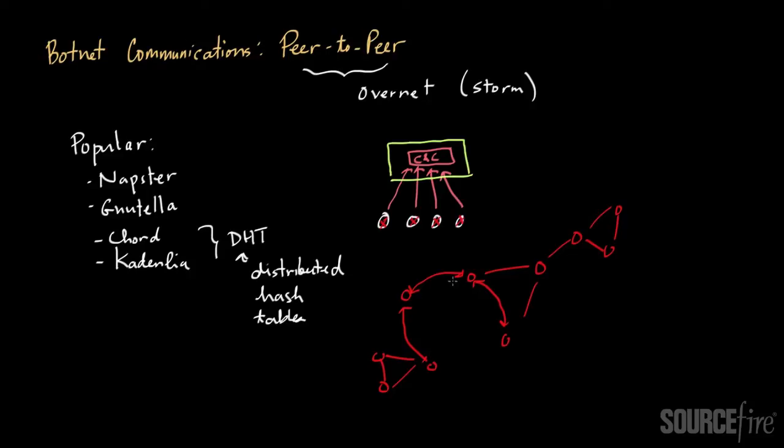And so as a result, there's no more single point of failure. The idea is that you take down, let's say you take down this node in the CNC, you're able to get rid of it. Well, these other nodes still kind of continue to exist. Every single node functions as both a client and a server. It's a CNC and a bot-infected host kind of built into one. So you don't have that issue of one node being responsible for the weight of the entire network from a reliability and robustness perspective.